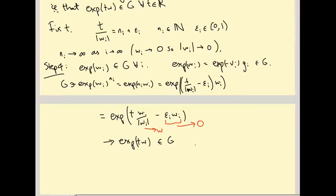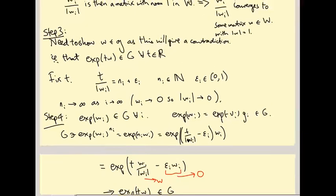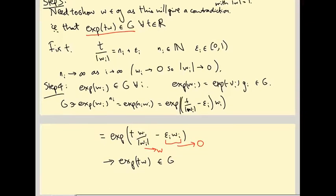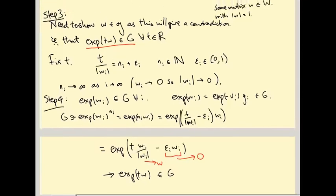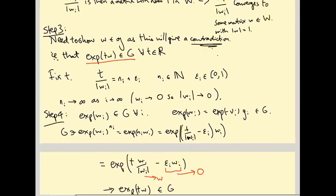This is exactly what we wanted: exp(tw) is in G for all t, so little w is in little g by definition. But little w was constructed as a nonzero element of W, the complement to little g, and a nonzero vector cannot be both in a subspace and its complement. This is the contradiction.